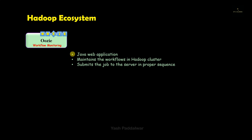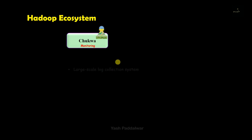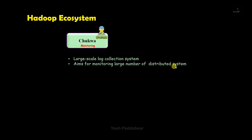The next component is Chukwa. This component is used for monitoring and is also called a large-scale log collection system because it has records of each and every process that takes place inside the Hadoop system. This functionality is used for monitoring large distributed systems easily and efficiently. It has a functionality of log indexing and log searching, which makes it faster to monitor and track all the processes inside the Hadoop system.